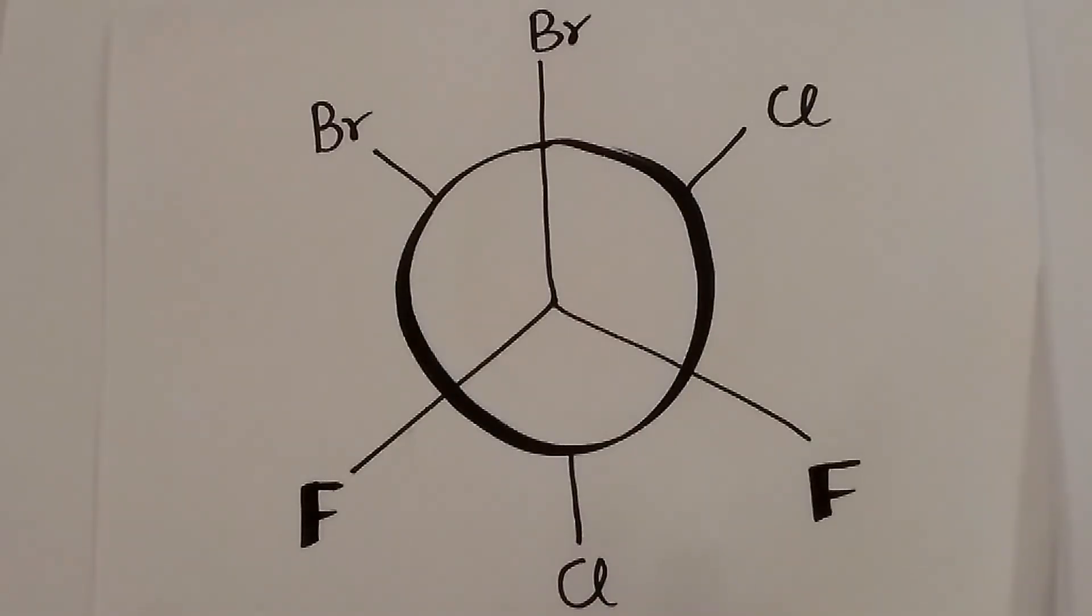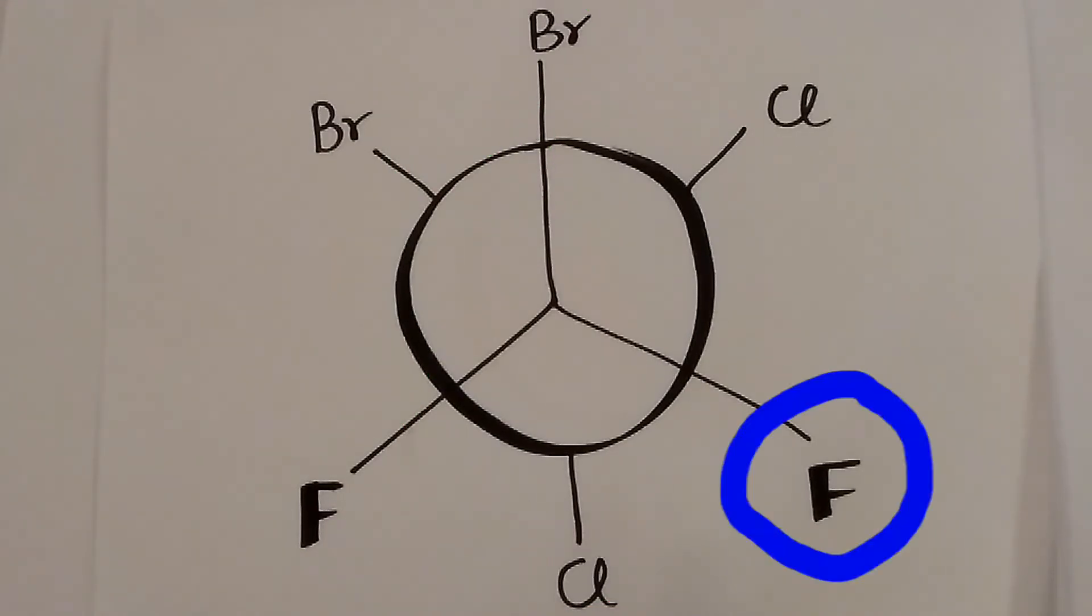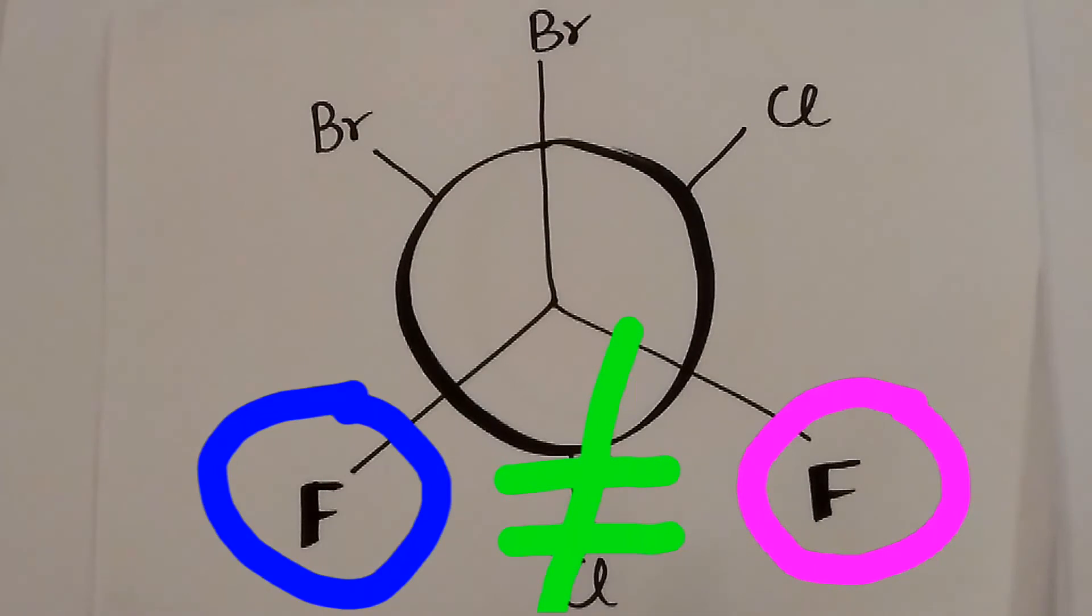Therefore, the first complex gives rise to two lines. In the second complex, this fluorine is surrounded by two bromine and a chlorine, but this fluorine is surrounded by two chlorine and one bromine. Therefore, they have different environments.